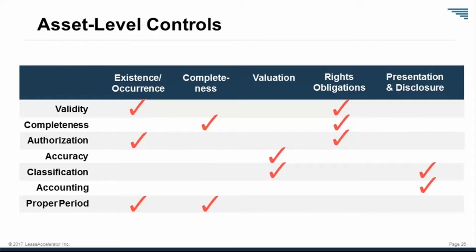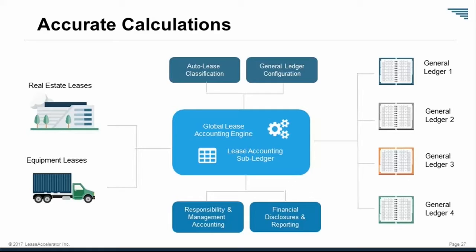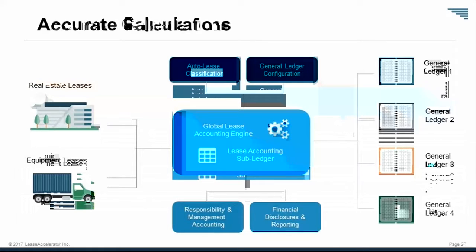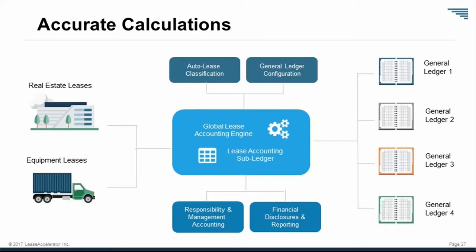You can plug in your existing real estate lease administration system — most companies already have one — being as unobtrusive as possible, doing a gap analysis on their data but leaving the system in place. What you want is a global lease accounting engine that's easy to federate across different ERP systems. Many large companies have grown by acquisition and have multiple ERP systems. You don't want to install a separate piece of software on every instance and then do a roll-up for consolidated company-wide disclosure. You want it automated, federated, so each entity only sees data relevant to them.